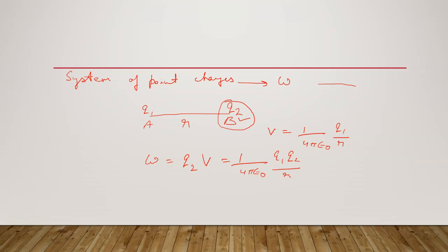This is the electric potential energy of the system of charges q1 and q2. So this is equal to the electric potential energy U of the system of charges q1 and q2.